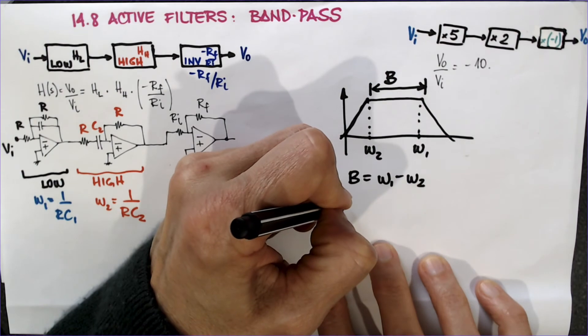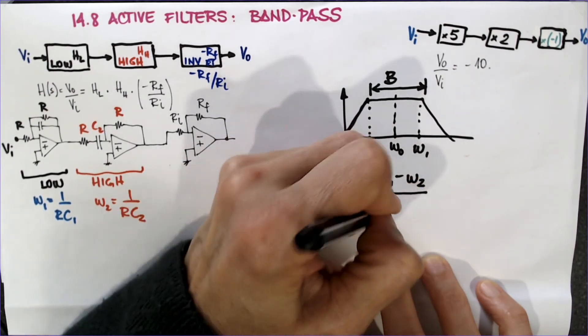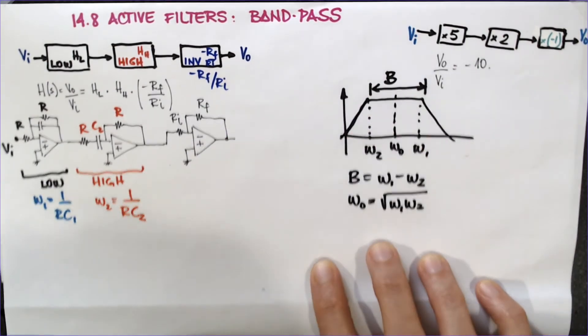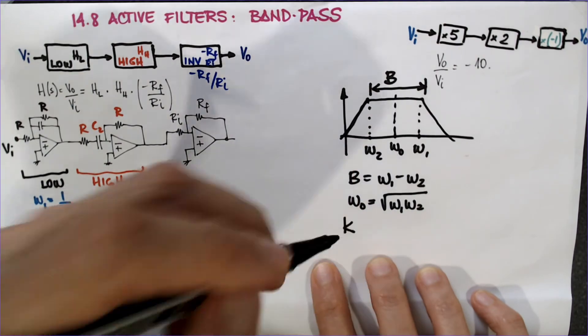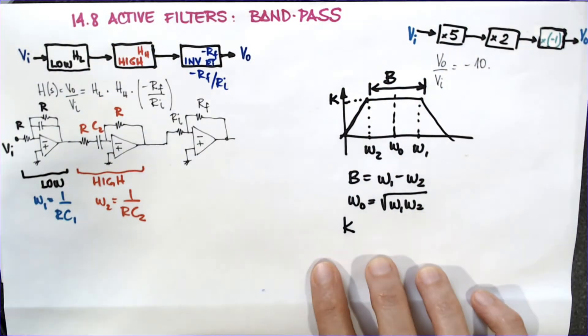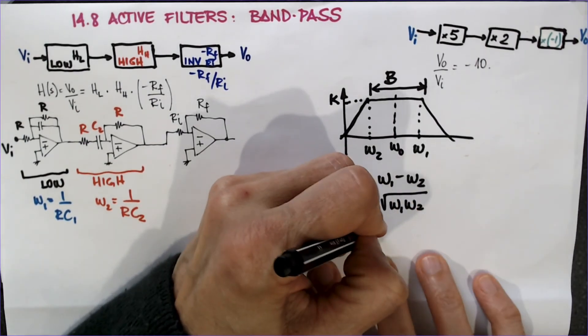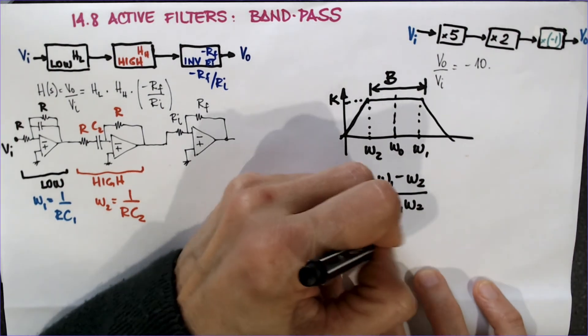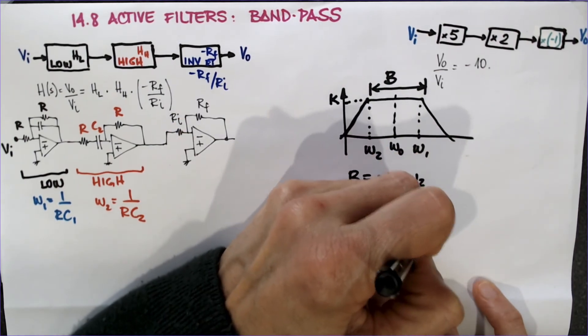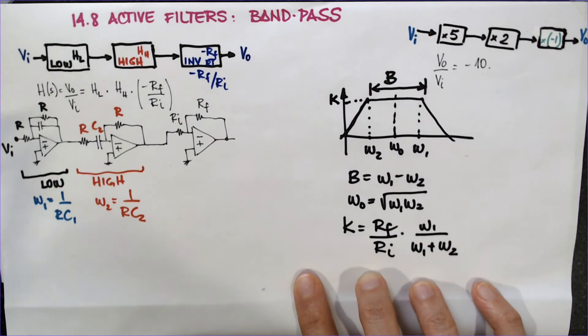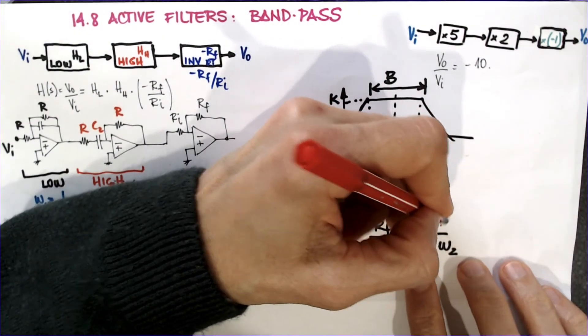And the center frequency, I'm going to call this omega naught. It's the geometric mean of the two. It's omega one, omega two. And the interesting thing that we haven't seen, and I won't, unfortunately prove, is the gain here. The gain in the band pass is different than what we would have expected. Rf over Ri times omega one over omega one plus omega two. So, and notice this omega one here is this large one.